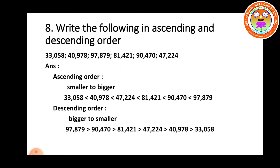For the descending order, the reverse order, bigger to smaller: 97,879 greater than 90,470 greater than 81,421 greater than 47,224 greater than 40,978 greater than 33,058.